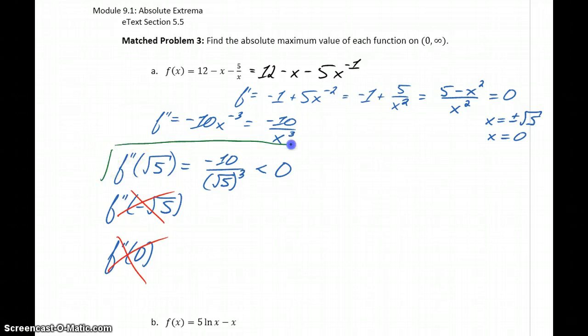Since our second derivative is negative, that tells us that we have an absolute maximum at f of square root of 5.